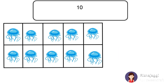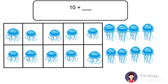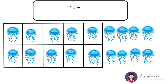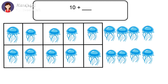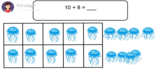There are 10 jellyfish in the box. How many jellyfish outside the box? To find out this number, we will count them. 1, 2, 3, 4, 5, 6, 7, 8. 8 jellyfish outside the box. So our second number will be 8.